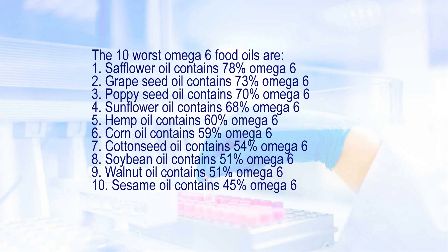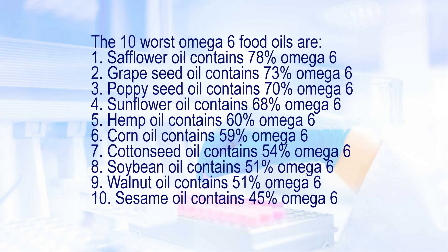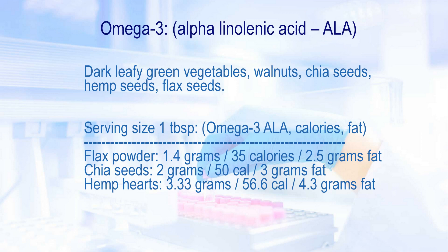Next is omega-3, a polyunsaturated fatty acid, also known as alpha-linolenic acid, ALA. The omega-6 was actually linoleic acid. Omega-3 sources consist of dark leafy green vegetables, walnuts, chia seeds, hemp hearts, and black seeds.